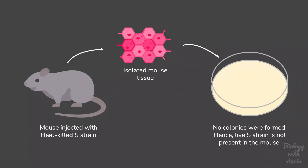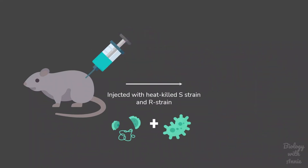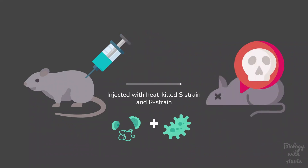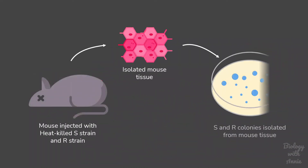What Griffith did not expect was that when the heat-killed S strain was injected along with the R strain, the mouse developed pneumonia and died. This was puzzling because the R strain alone is not capable of causing disease. To investigate, he isolated bacteria from this mouse and shockingly found that it carried both the R strain and the live virulent S strain.